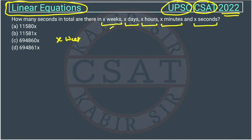So x weeks - in x weeks, how many seconds will be there? This will be x. And in one week, there are seven days and in one day, there are 24 hours. And in each hour, there are 60 minutes and in each minute, there are 60 seconds. So this is total seconds.